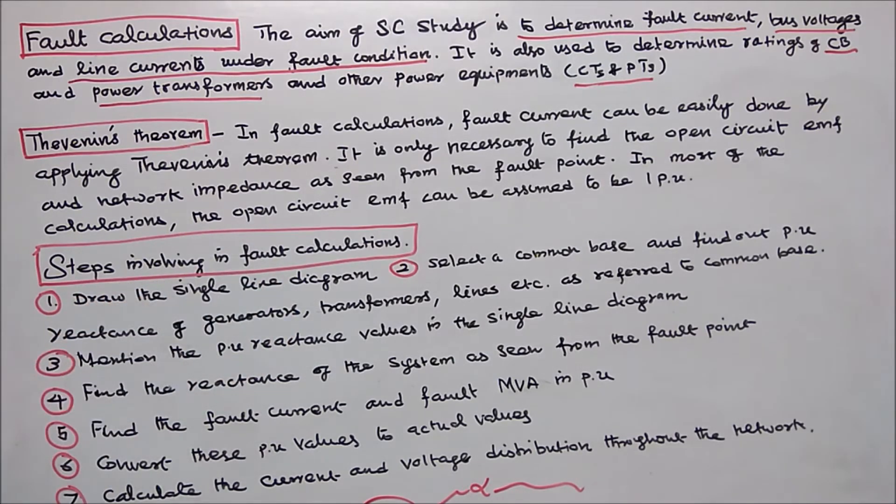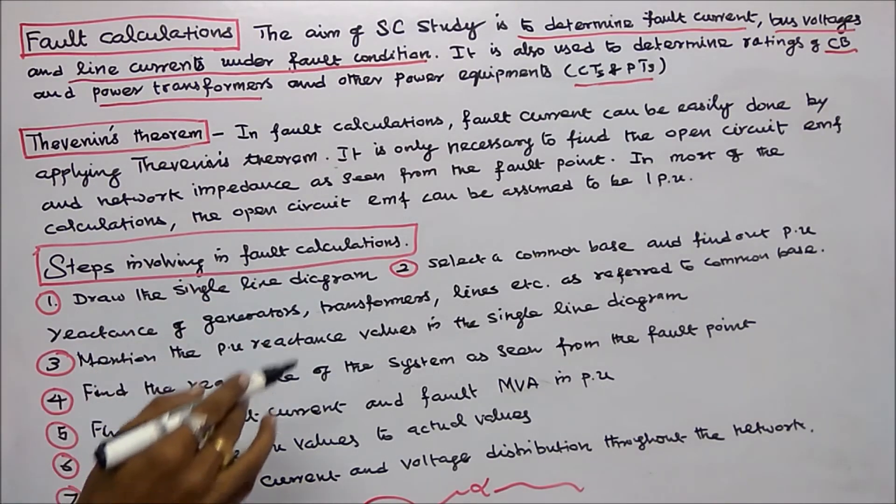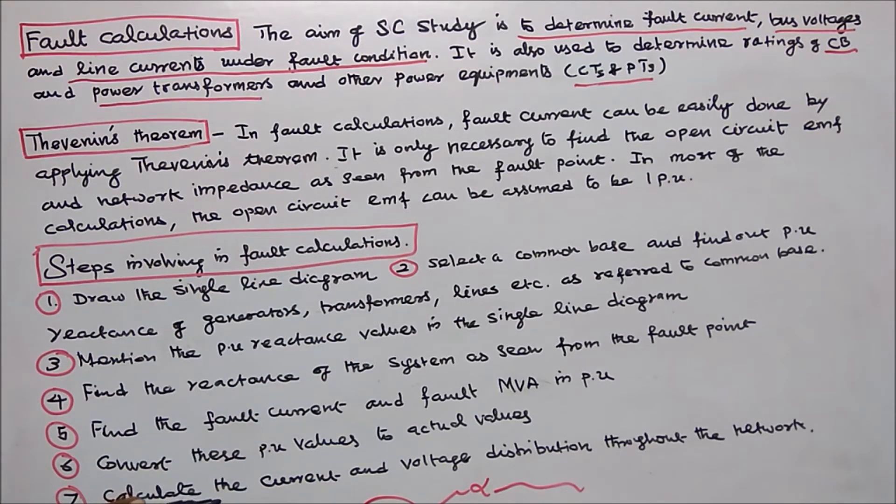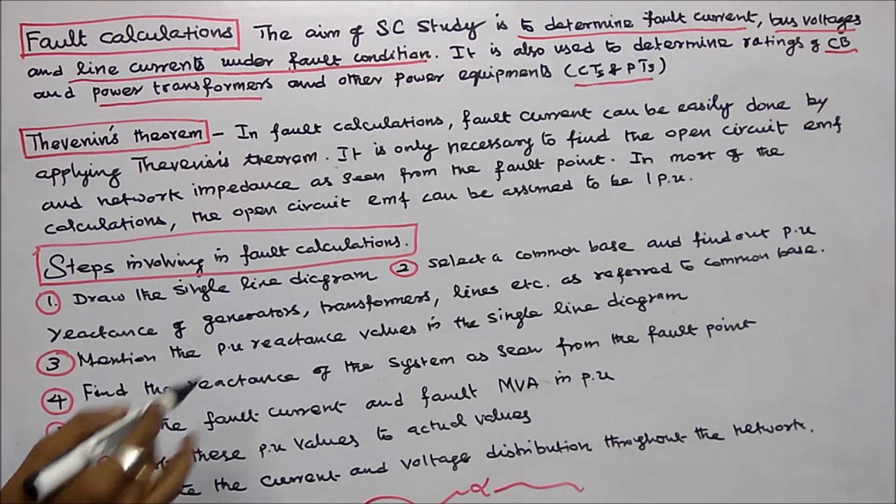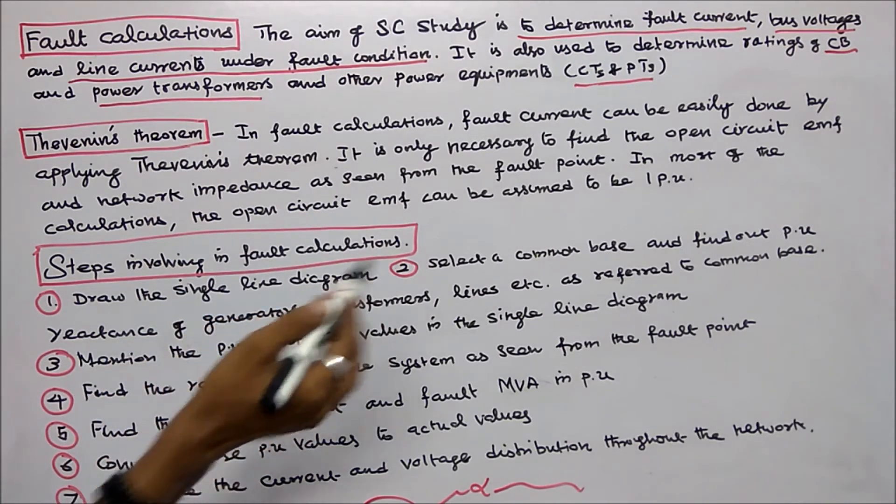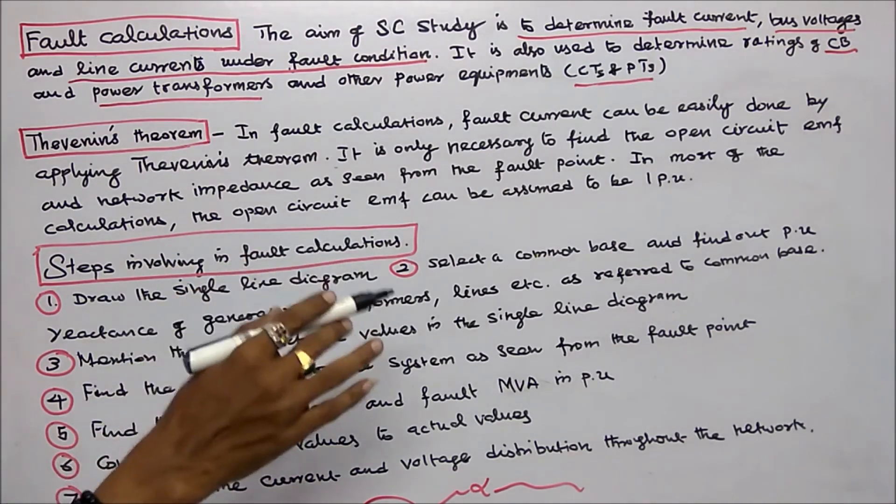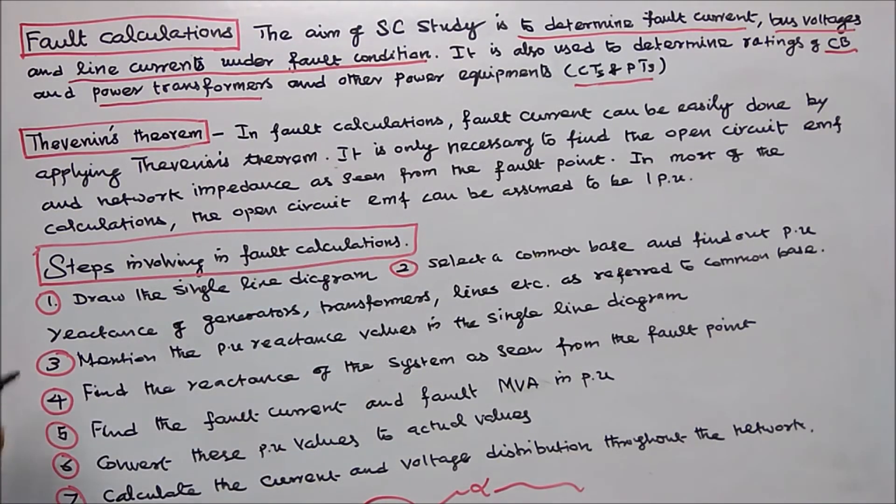Steps involving in fault calculations: Step one, draw the single line diagram. Step two, select a common base and find out per unit reactance of generators, transformers, lines, etc., as referred to common base.